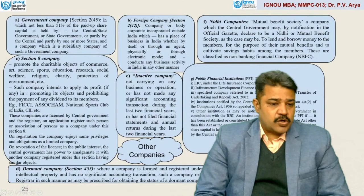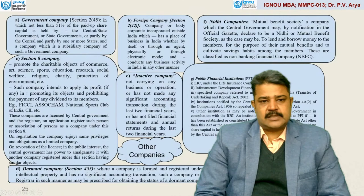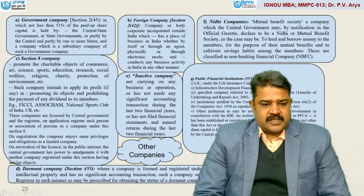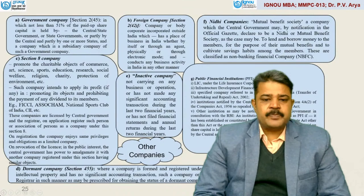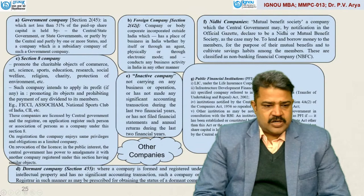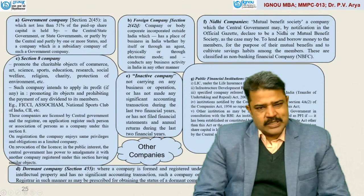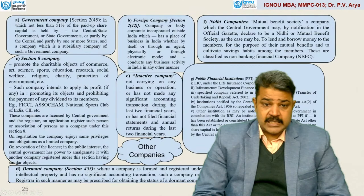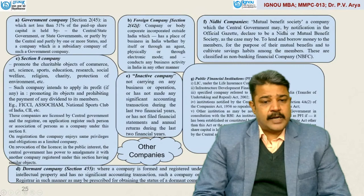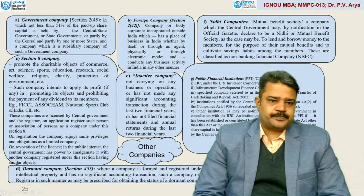On revocation of the license in the public interest, the central government has the power to amalgamate it with another company registered under this section having similar objects. A dormant company under Section 455 is where a company is formed and registered for a future project or to hold an asset or intellectual property and has no significant accounting transaction. Such a company or an inactive company may make an application to the registrar for obtaining the status of dormant company. Inactive company means not carrying on any business or operations, has not made any significant accounting transaction during the last two financial years, or has not filed financial statements and annual returns during the last two financial years.